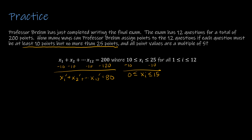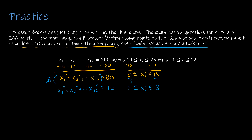Since all point values must be multiples of 5, we factor out 5 and divide both sides by 5. This gives x1'' + x2'' + ... + x12'' = 16, where 0 ≤ xi'' ≤ 3 for all i. This is the simplified equation we'll work with for the rest of the problem.